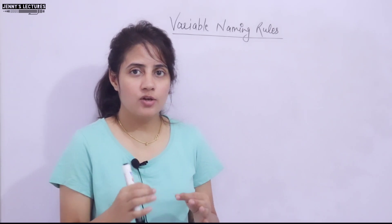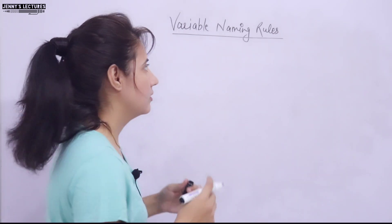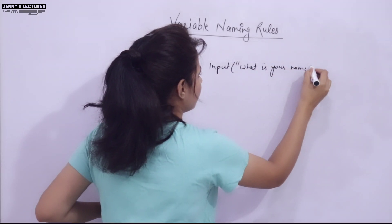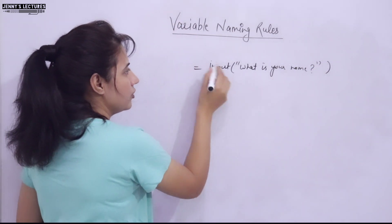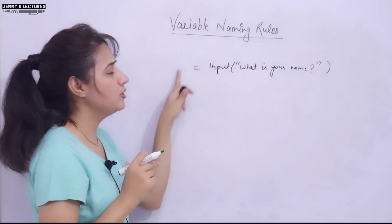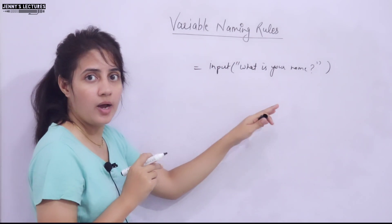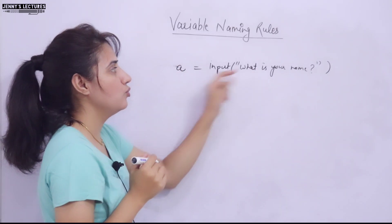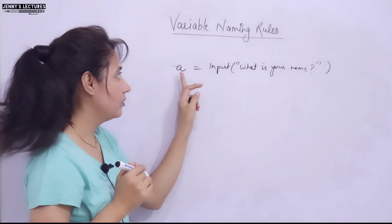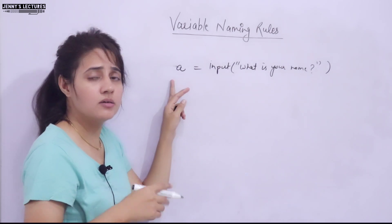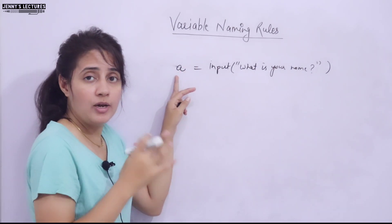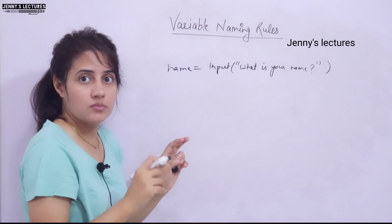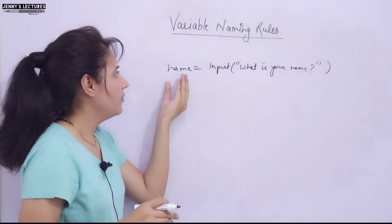The first thing is not exactly a rule, but you should take care of it: the variable name should be meaningful. For example, if I'm asking the user for their name and storing it in a variable, that variable name should be meaningful — like 'name'. Although you can use 'a = input("What is your name?")' and it will store the value, by looking at 'a' you cannot tell what type of value is stored. But if you use 'name', you can immediately understand it holds someone's name.